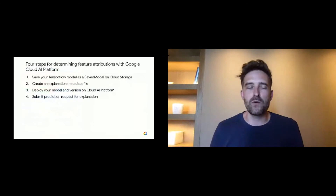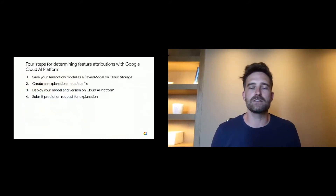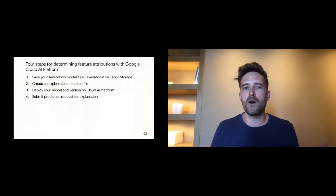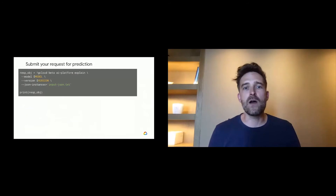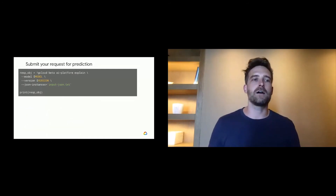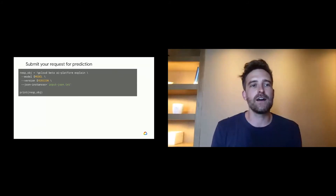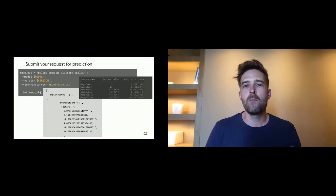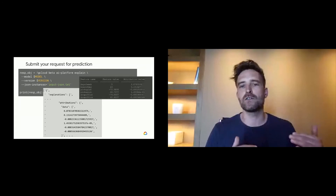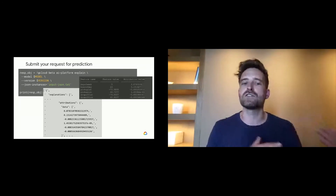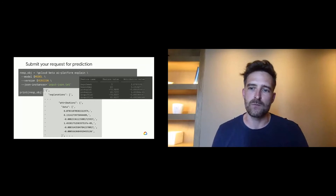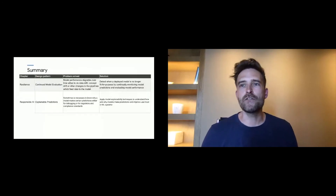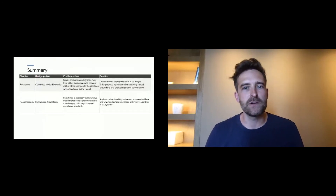There are ways to incorporate explainability with Google Cloud Platform. It's pretty simple — when you deploy your model, you can set it up to provide explanations with your predictions. You pass an instance for prediction and use AI Platform explain, so when you get your prediction you also get sample Shapley values for the attribution value for each of the features from that instance.